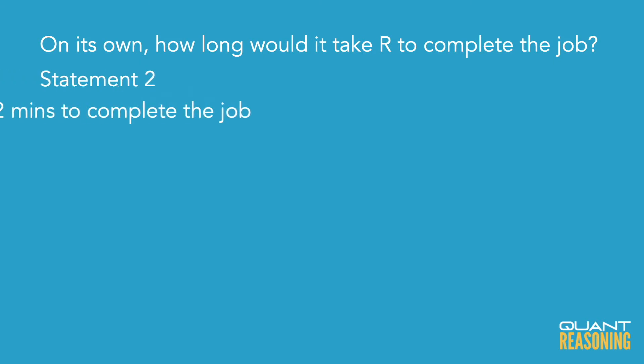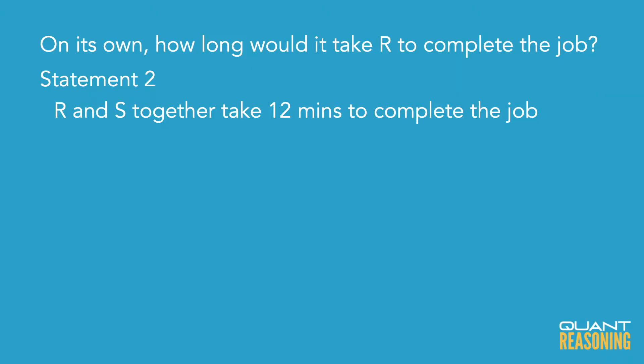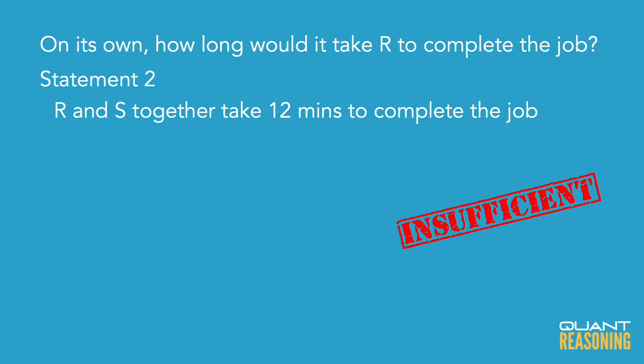Let's start with statement two, because statement two just tells us how long it would take the two machines together, and I can't infer from that how long it would take one of them on its own. If we knew the machines were identical, each machine on its own would take 24 minutes, but we don't know they have identical rates. So statement two is not sufficient — B and D are gone, and we're down to A, C, or E.